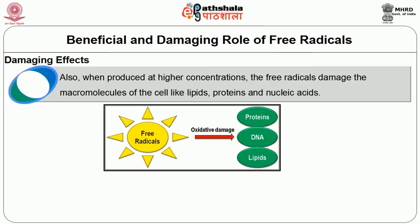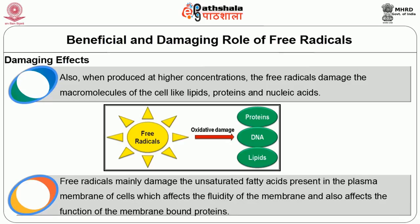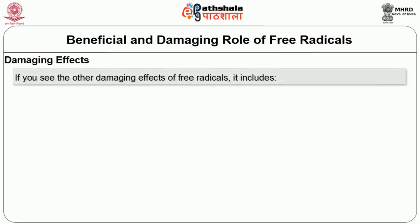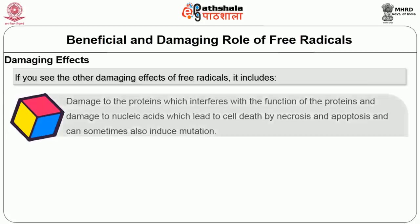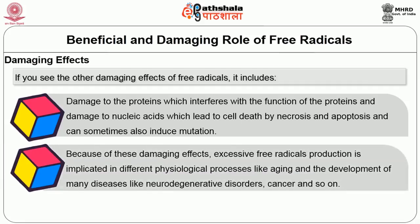When produced at higher concentrations, free radicals damage the macromolecules of the cell like lipids, proteins, and nucleic acids. Free radicals mainly damage the unsaturated fatty acids present in the plasma membrane of cells, which affects the fluidity of the membrane and also affects the function of membrane-bound proteins. Other damaging effects include damage to proteins, which interferes with protein functions, and damage to nucleic acids, which leads to cell death by necrosis and apoptosis and can sometimes also induce mutation. Because of these damaging effects, excessive free radical production is implicated in different pathological processes like aging and the development of neurodegenerative disorders, cancer, and so on.